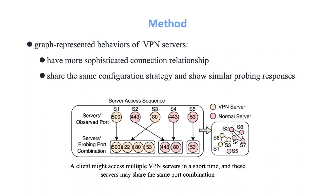We observe that compared to VPN servers, normal servers are accessed by numerous clients and typically exhibit a more sophisticated connection relationship. We construct a communication graph to capture servers' connection behaviors.